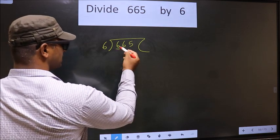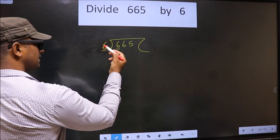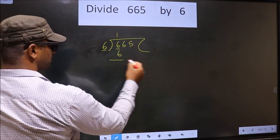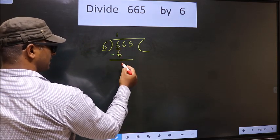Now here we have 6, here also 6. When do we get 6 in the 6 table? 6 once is 6. Now you subtract: 6 minus 6 is 0.